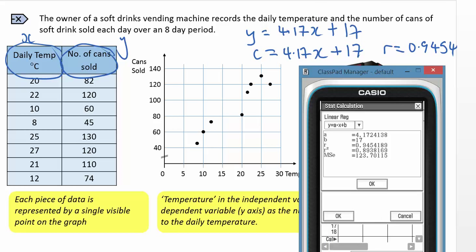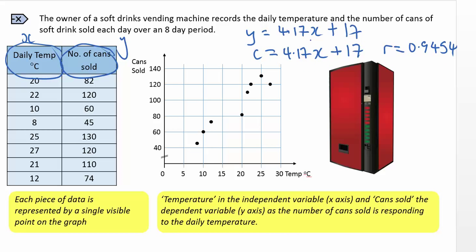So just writing that down, y is equal to 4.17x plus 17. In terms of the variables we've been given, cans sold equals 4.17 times the temperature, might make that T, plus 17.